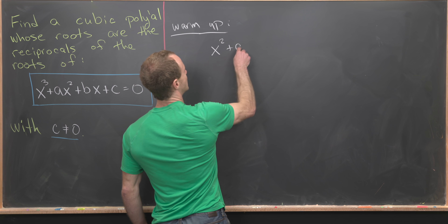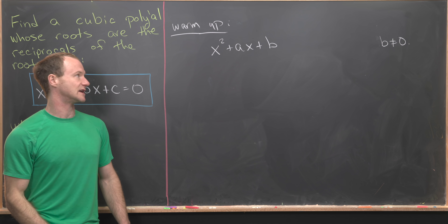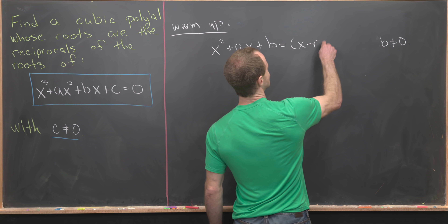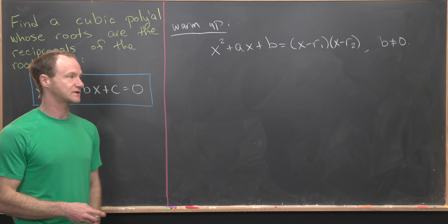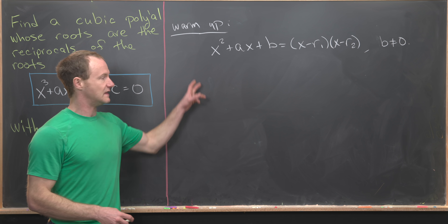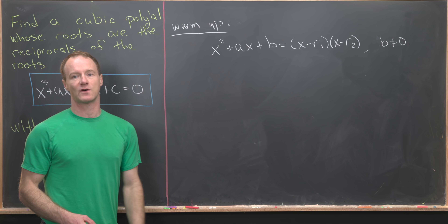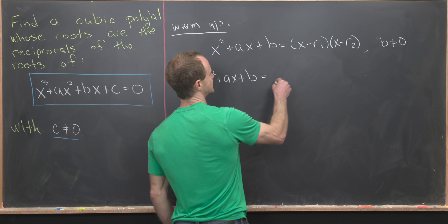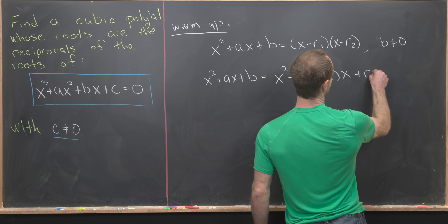We want to look at the polynomial x squared plus ax plus b, where b is not equal to 0, so the constant term is not equal to 0. Let's think about factoring this into its roots: we'll factor it as x minus r1 and x minus r2, where r1 and r2 are the roots of this quadratic polynomial. Multiplying out x minus r1 and x minus r2 gives us x squared minus (r1 plus r2) times x plus r1 times r2.